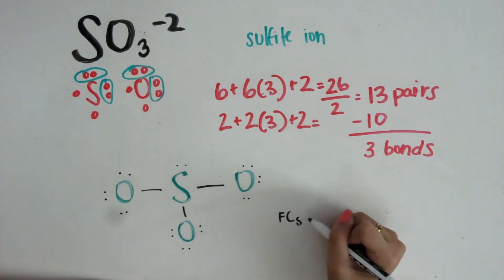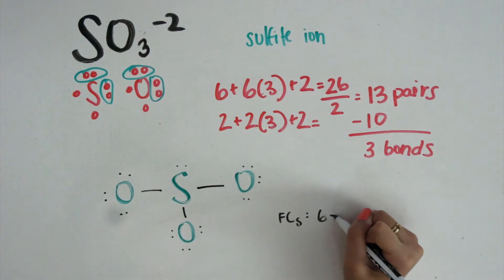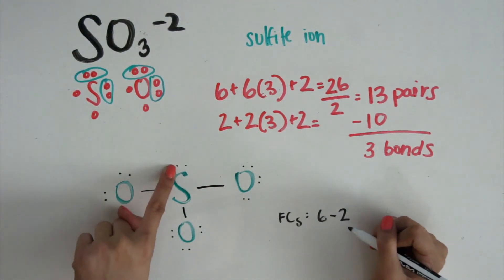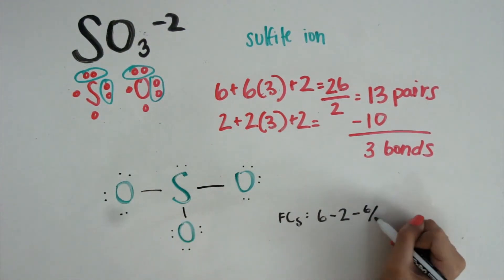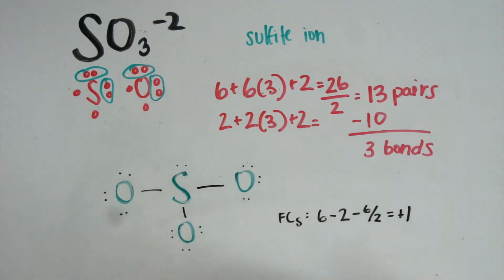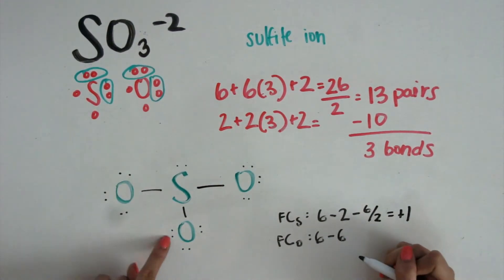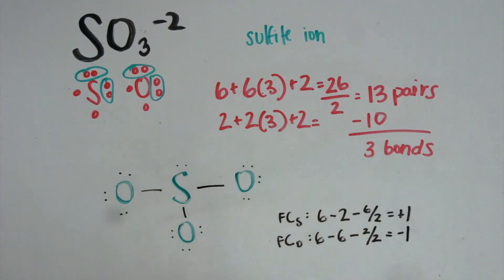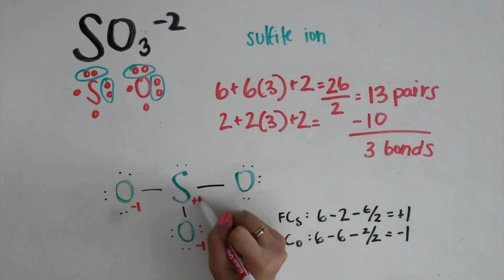Formal charge of sulfur, which is 6 because of the electrons, minus 2 because there is 1 lone pair. Minus 6 electrons because there are 3 bonds. Divide by 2 and this equals positive 1. The formal charge of oxygen is 6 because there are 6 valence electrons. Minus 6 because there are 6 lone electrons. Minus 2 in one bond. And this gives us negative 1. This is how the Lewis dot structure looks like.